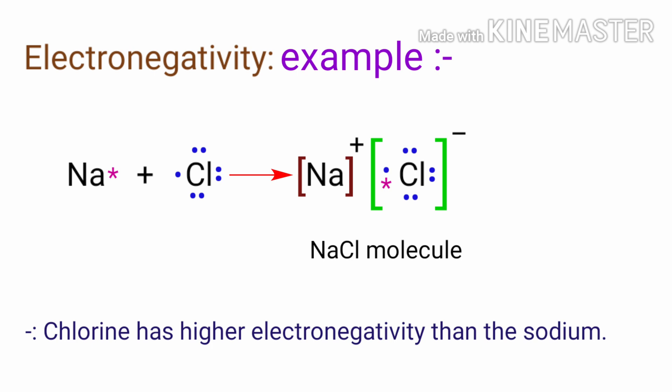In the sodium chloride molecule, the chlorine atom has higher electronegativity than the sodium atom, so the bonding electrons will be closer to the chlorine than the sodium in the sodium chloride molecule.